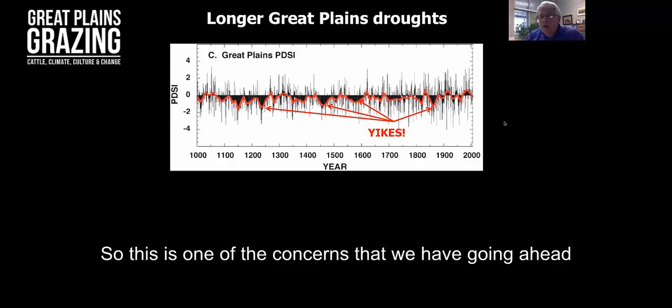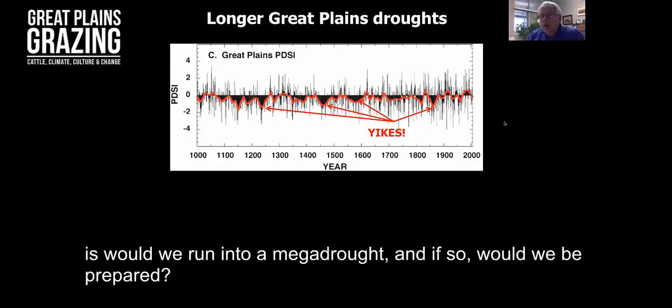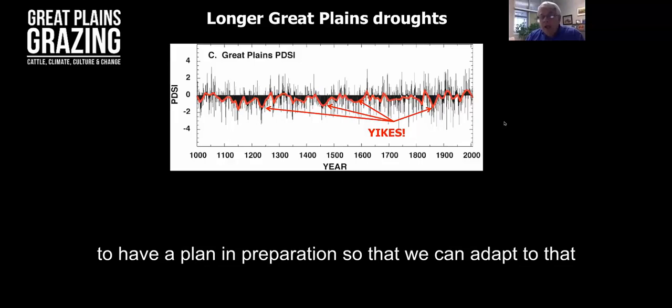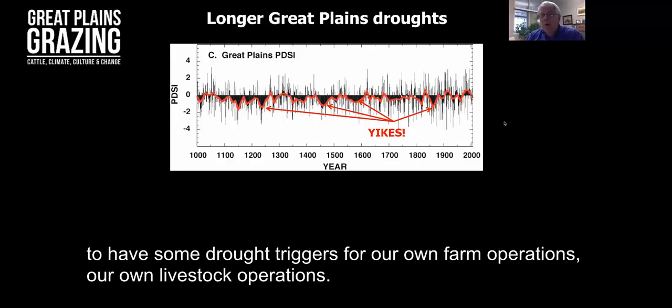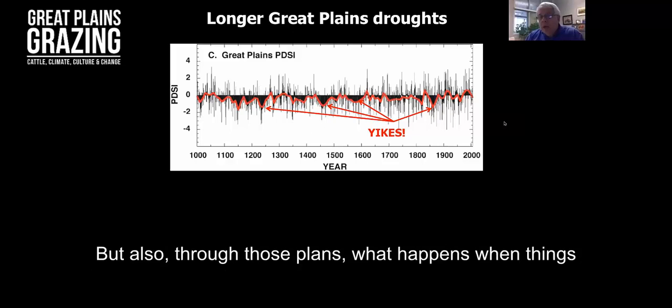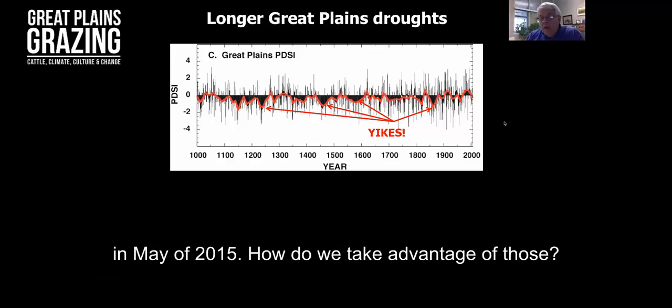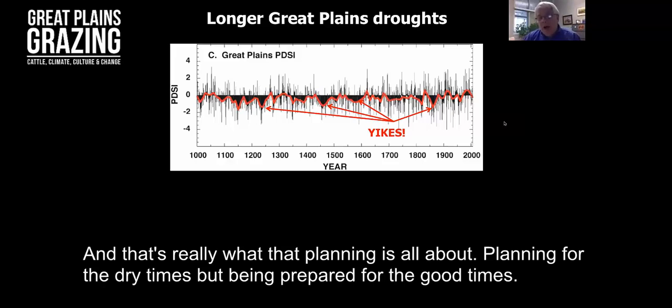This is one of the concerns that we have going ahead—would we run into a mega drought and if so would we be prepared. It really points us to the need to plan for drought times, to have a plan in preparation so that we can adapt, to have some drought triggers for our own farm operations, our own livestock operations. But also through those plans, what happens when things turn around and we get the kind of surprise rains that we've had in May of 2015, how do we take advantage of those. That's really what that planning is all about—planning for the dry times but being prepared for the good times.